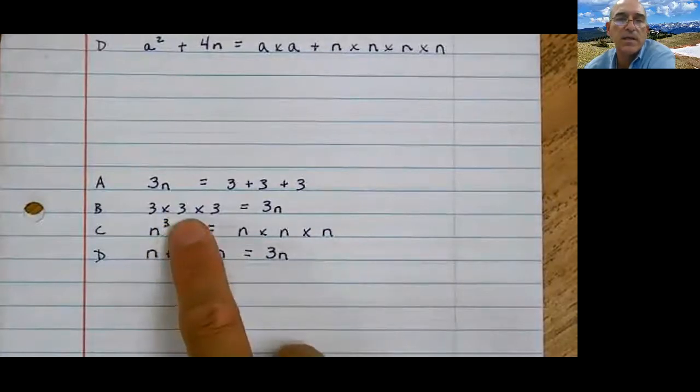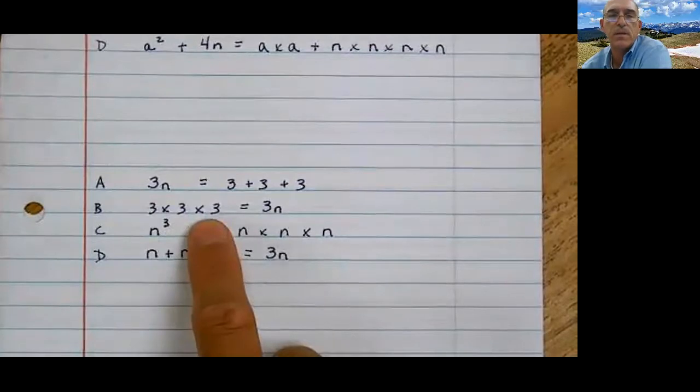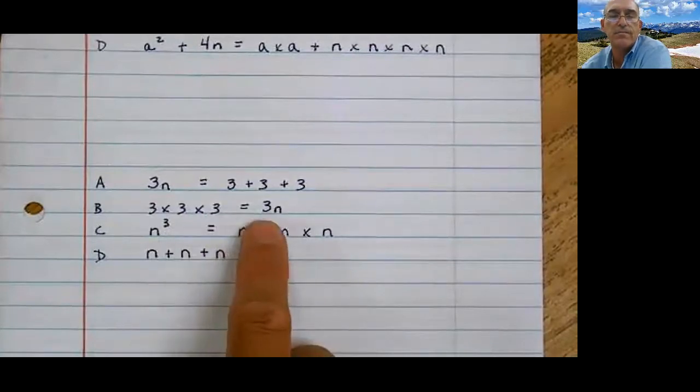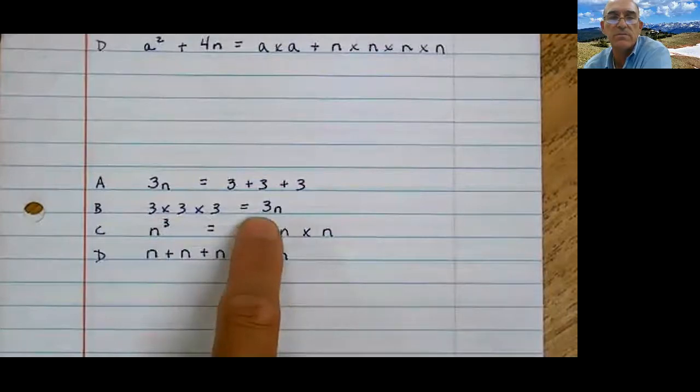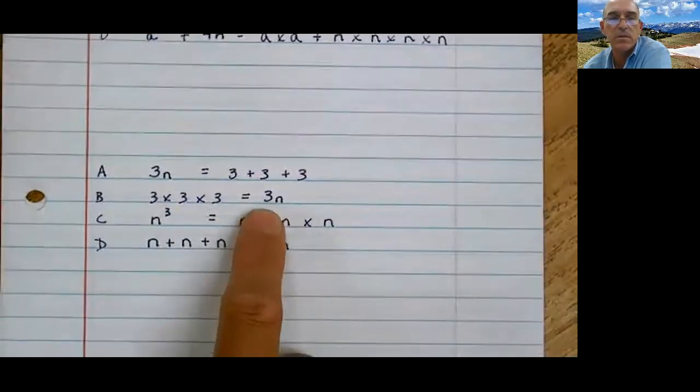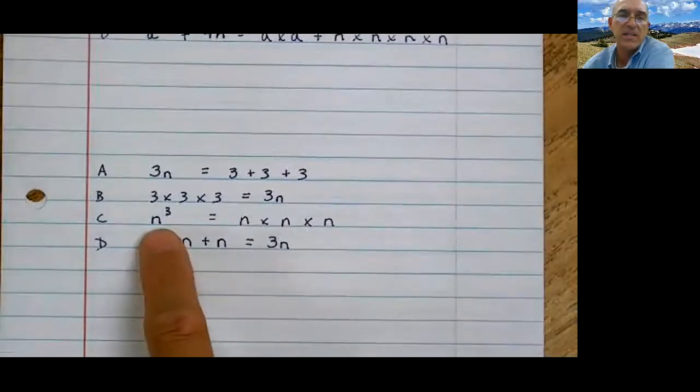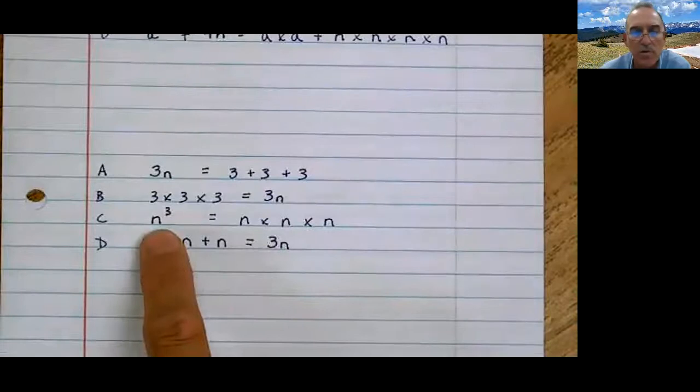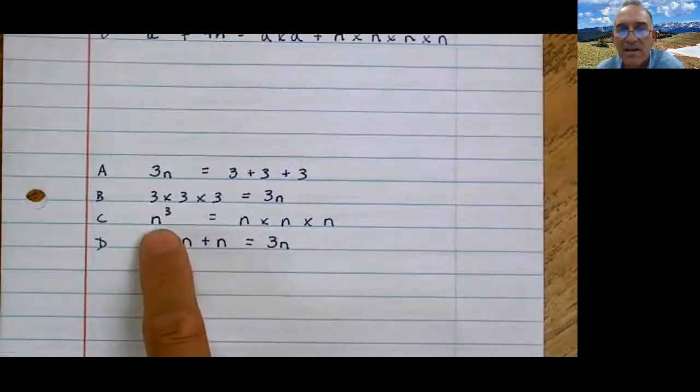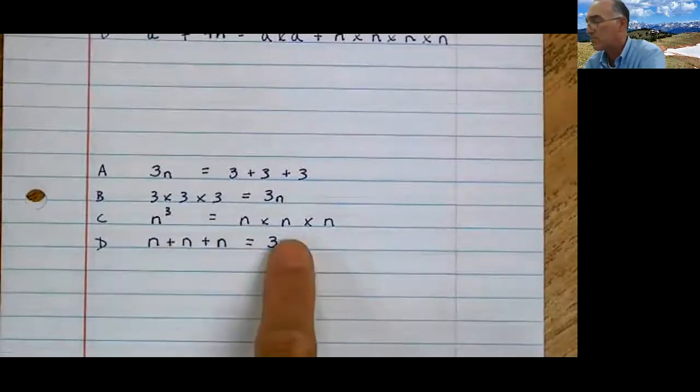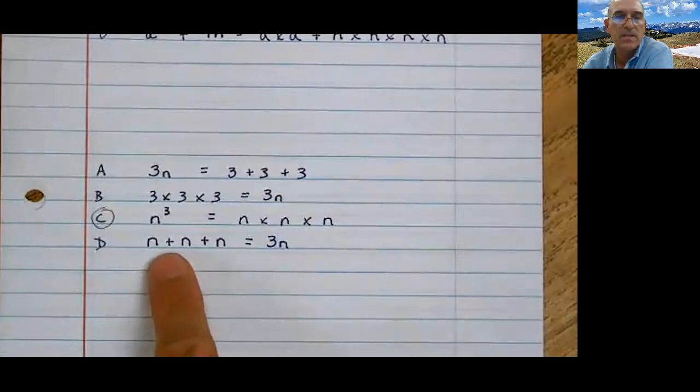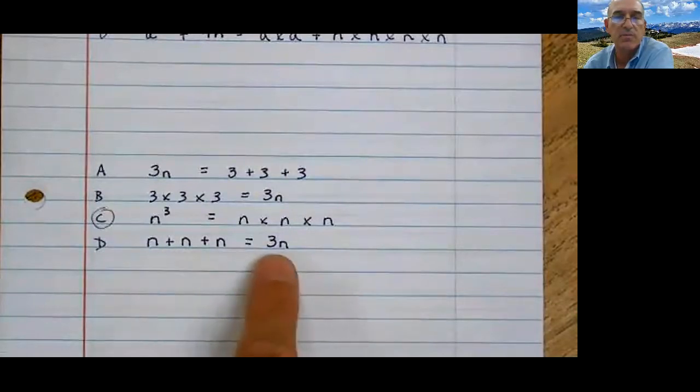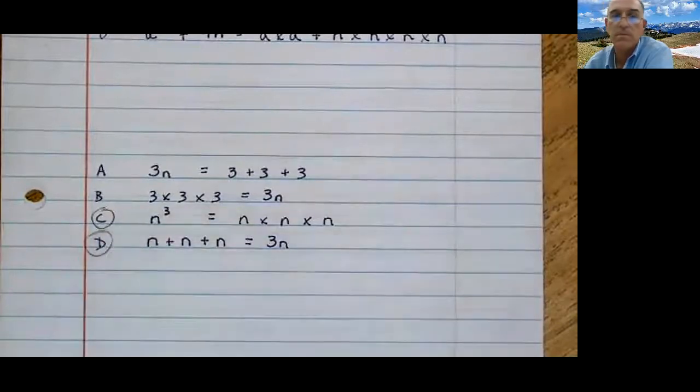How about this one? 3 times 3 times 3 equals 3n? No, because I know this over here on the left equals 27. Does that equal 27? I don't know, because I don't know what n equals. How about this one? n to the third - you should know by now that means n times n times n. So that's true. How about this one? n plus n plus n, well that's 3n, and there it is.